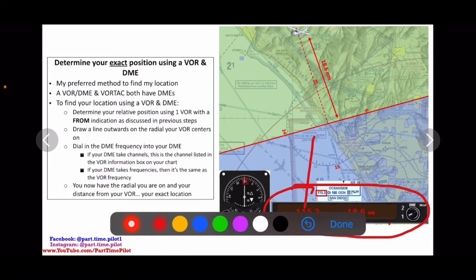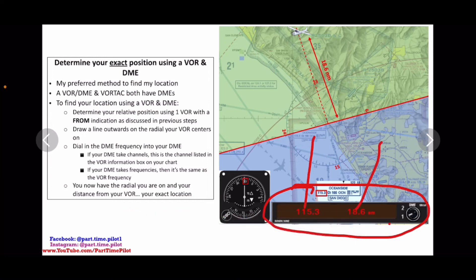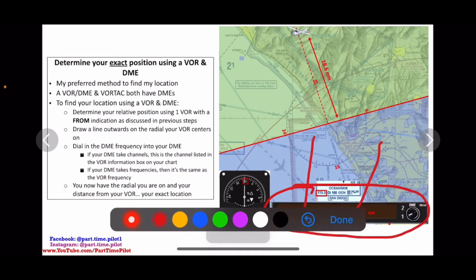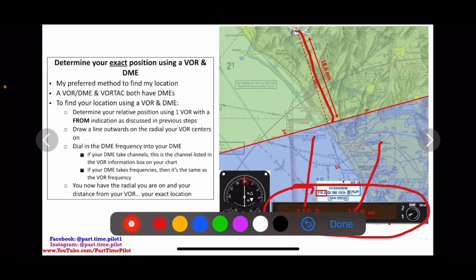We have our frequency dialed in there, and then we're going to have our distance that it tells us right there. All we have to do is dial that in and we'll get a distance. So now we have a distance from the station and we know what radial we sit on from the station, and that will give us the exact location of our aircraft on this line.